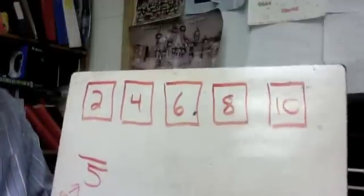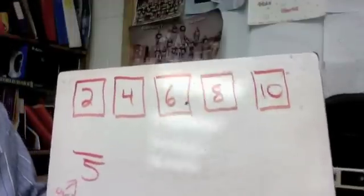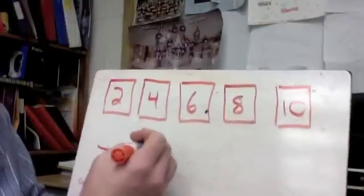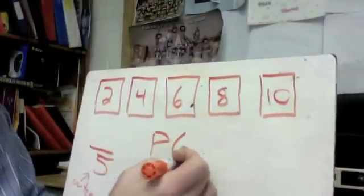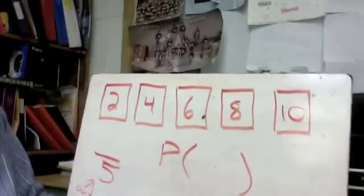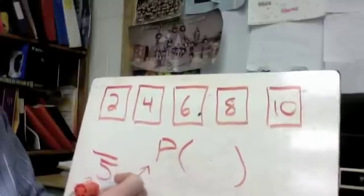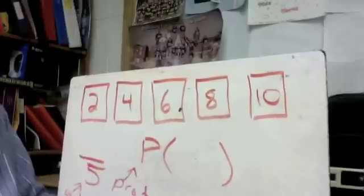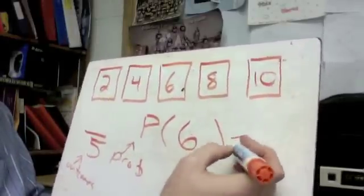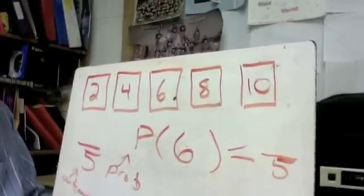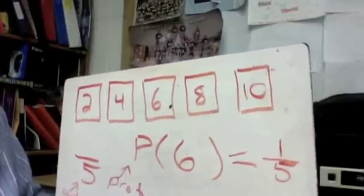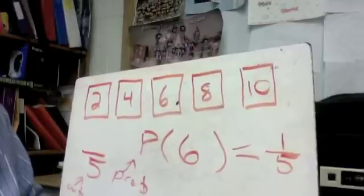So we're going to do a couple of different probability problems and then talk about some of those vocab words that we came up with in the reading before this. The first thing I want to show you, if you ever see something like this, P with the parentheses and something inside the parentheses, this means probability of whatever's in these parentheses. So this is just going to mean probability. So if my question is, give me a probability of drawing a six, probability of drawing a six and it's out of five outcomes and there's only one six. So my probability of drawing a six is one out of five. You've got a one out of five chance of drawing that six.